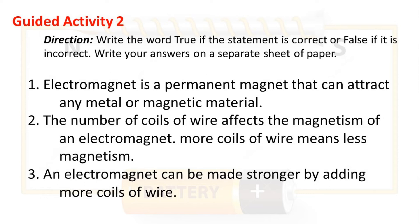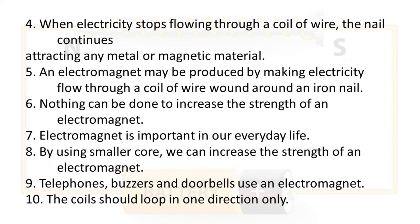Guided Activity 2. Direction: Write true if the statement is correct or false if it is incorrect. Write your answers on a separate sheet of paper. 1. Electromagnet is a permanent magnet that can attract any metal or magnetic material. 2. The number of coils of wire affects the magnetism of an electromagnet. More coils of wire means less magnetism. 3. An electromagnet can be made stronger by adding more coils of wire. 4. When electricity stops flowing through a coil of wire, the nail continues attracting any metal or magnetic material. 5. An electromagnet may be produced by making electricity flow through a coil of wire wound around an iron nail. 6. Nothing can be done to increase the strength of an electromagnet.